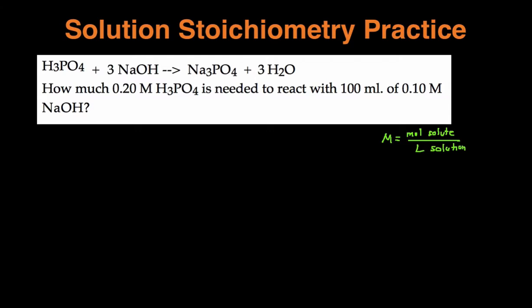Alright, since once you have that in mind, let's go ahead and try these two practice problems. So the first practice problem tells us we have this reaction that is asking us how much of the 0.20 molar H3PO4 is needed to react with 100 milliliters of 0.1 molar NaOH.